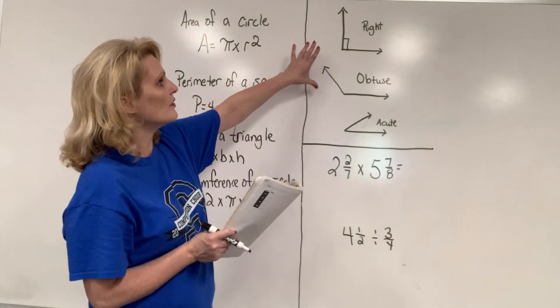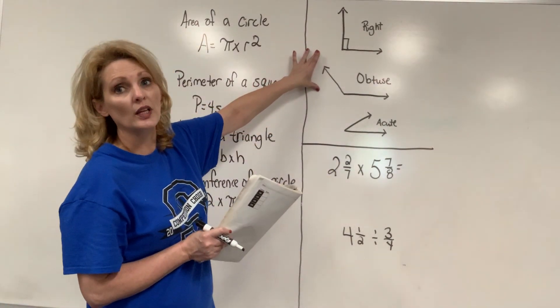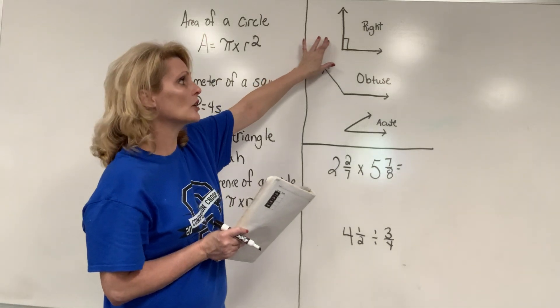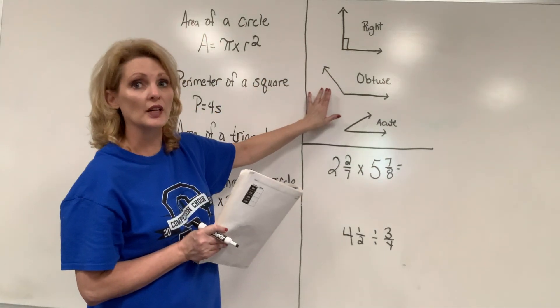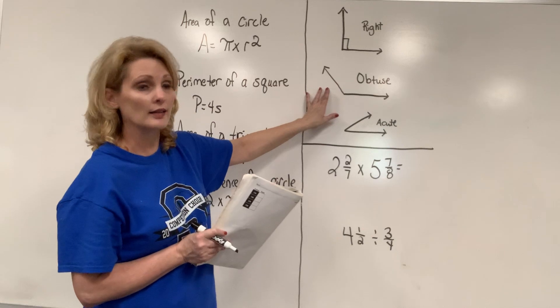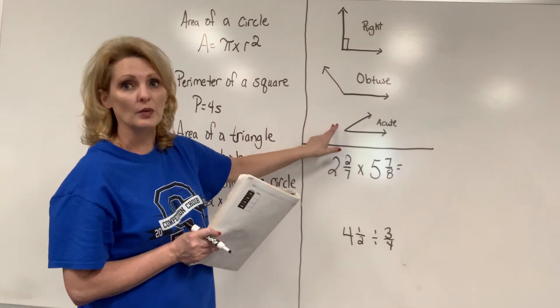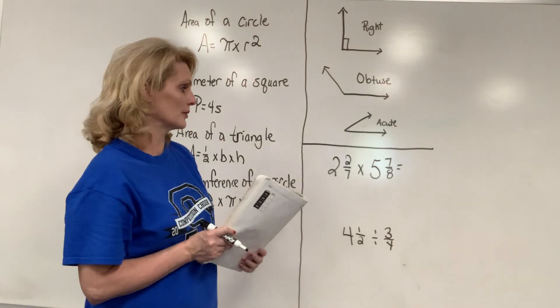A review of the angles that we have been working on. This is a right angle. This is obtuse because it's larger than 90 degrees. And then this is acute because it's smaller than 90 degrees.